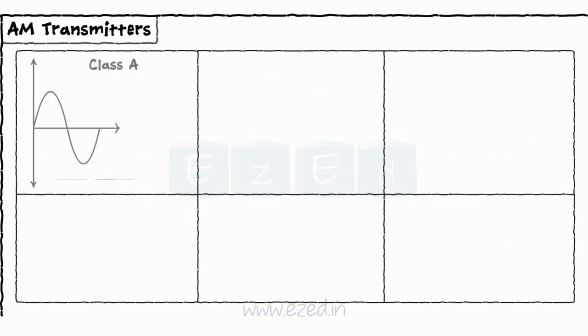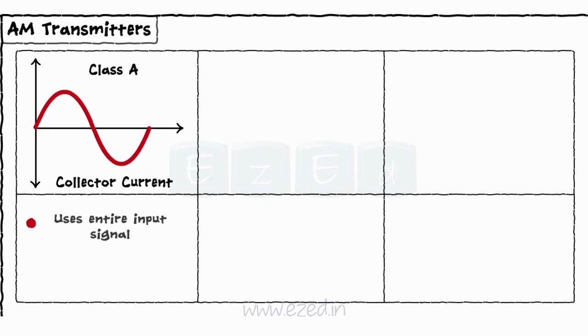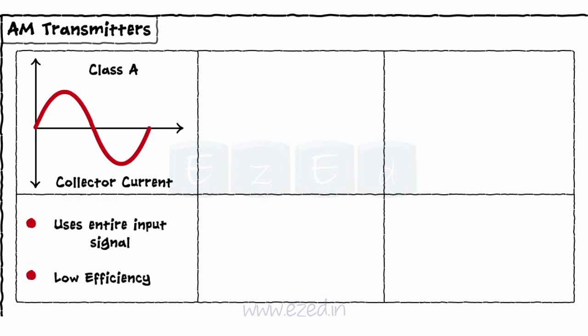In class A amplifier, the collector current flows for the entire input signal. As this amplifier uses the entire input signal, its efficiency is low.